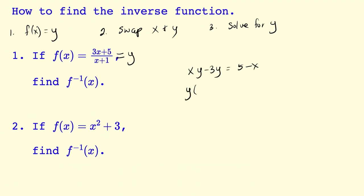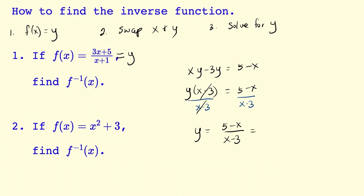We're going to factor out the y: x minus 3 is equal to 5 minus x. And to get y alone, we're going to divide by x minus 3 on both sides. This will cancel, and we get y is equal to 5 minus x divided by x minus 3. And this is equal to the inverse of f of x. Our inverse function of f of x is equal to 5 minus x divided by x minus 3.